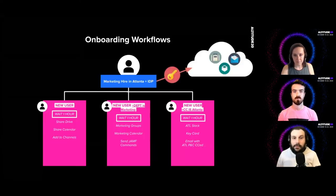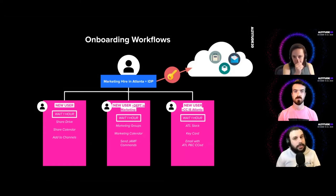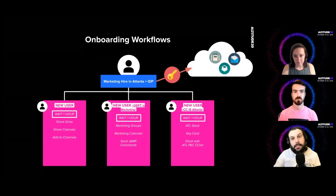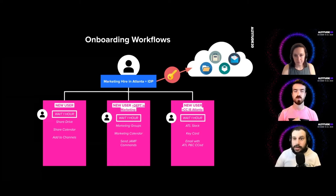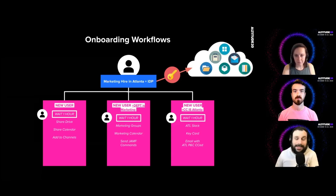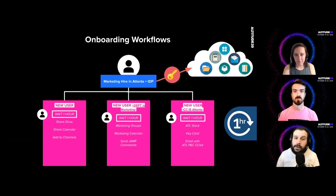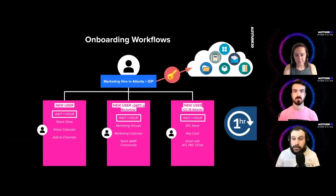Here's an example of a marketing user in Atlanta, but now we're using an IDP. The user is created, triggering BetterCloud's three workflows — they get access to those three applications. As the BetterCloud workflow starts, we wait for one hour to handle race conditions, ensuring the user has access to all their applications. The IDP grants access, and once the hour passes and the user is confirmed in all applications, the other workflows kick off: Atlanta Slack channel, marketing calendar, key card access via API, MDM commands to their computer, and a welcome email from the Atlanta people and culture team.